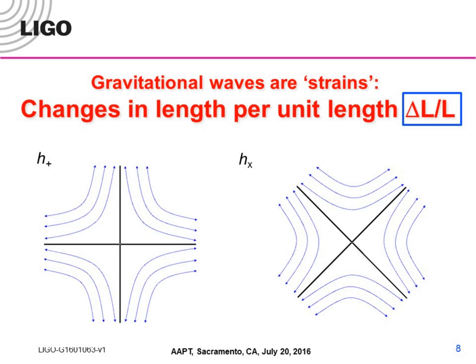How small is this challenge? Imagine a mad scientist with two masses of about 1,000 kilograms, separated by about a meter, spinning them at 1,000 times a second. If you run the numbers, you get a strain of 10 to the minus 35. If you're an experimentalist, that's a daunting number — you just fold up shop, walk away, and do something else.